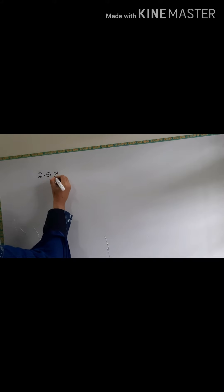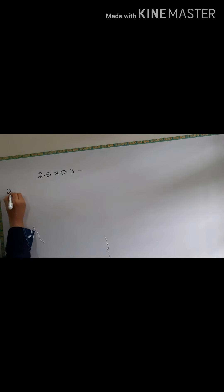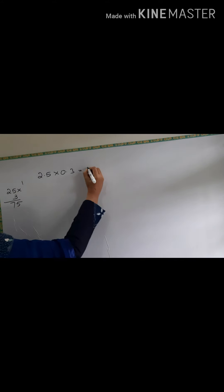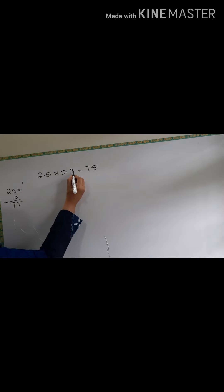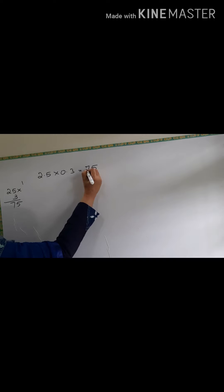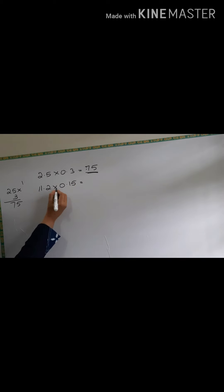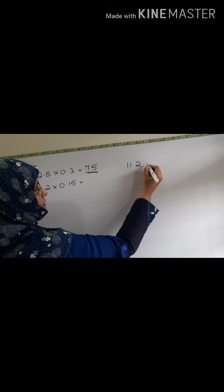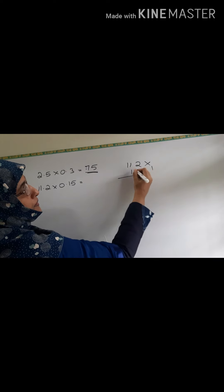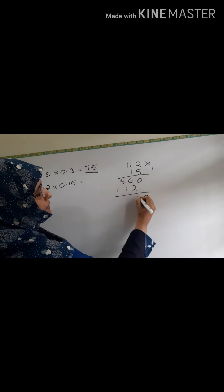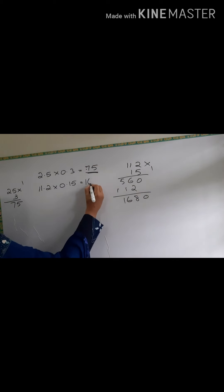Next: 2.5 into 0.3. Remove the decimal — it is 25 into 3. 25 into 3 is 75. Here one digit after decimal and here also one digit after decimal, so total 2 digits. From the right side count 1, 2. The answer is 0.75. Next: 11.2 into 0.15. 11.2 becomes 112 and 0.15 is 15. Multiply 112 into 15: gives 1680. Here one digit after decimal and here two digits after decimal, so total 3 digits from the right. Count 1, 2, 3.